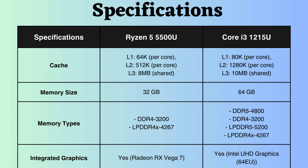The Intel Core i3-1215U supports DDR4, DDR5, LPDDR4, and LPDDR5 memory modules, while the Ryzen 5500U supports only DDR4 and LPDDR4. Additionally, the RAM frequency that the Intel processor can handle is higher than that of the Ryzen 5500U.